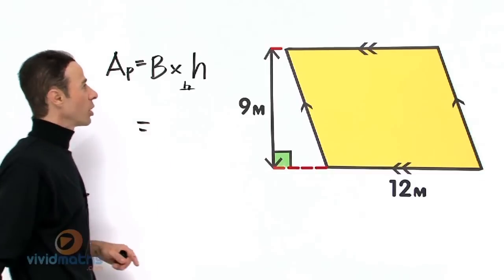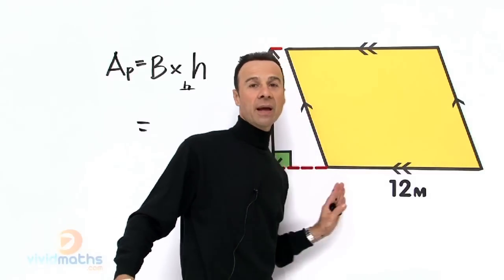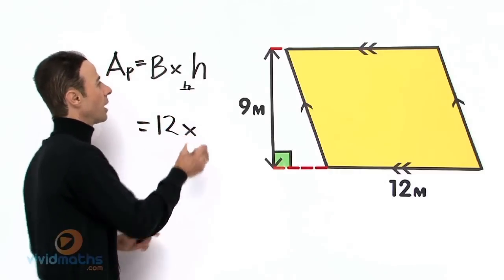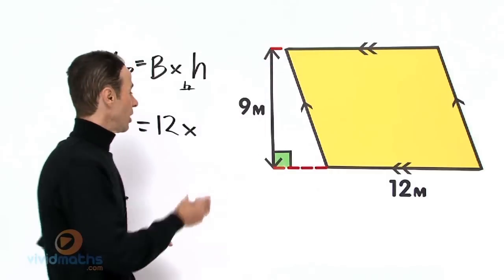So let's substitute in there. What do we have for the base? The base is from this corner to that corner—it's 12 meters. So that's 12 times, and the height across there is 9 meters.